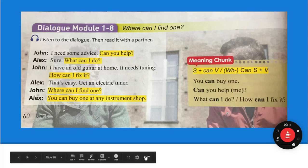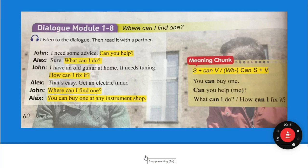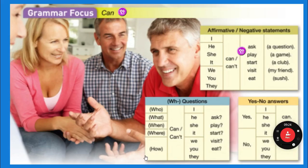The structure is: subject + can + verb, or WH + can + subject + verb. For example: you can buy one. Can you help me? What can I do? How can I fix it? Your WH questions are: who, what, when, where, why, and how. Those are your WH questions.